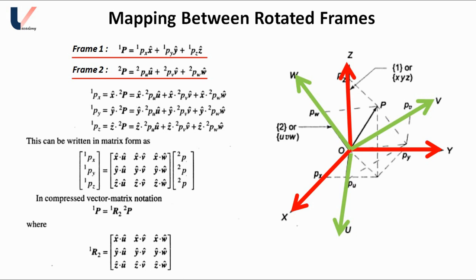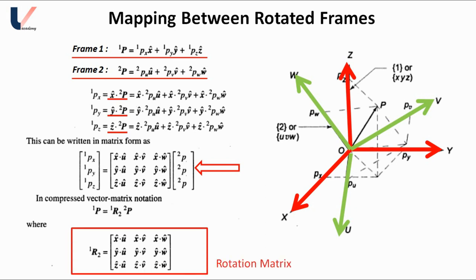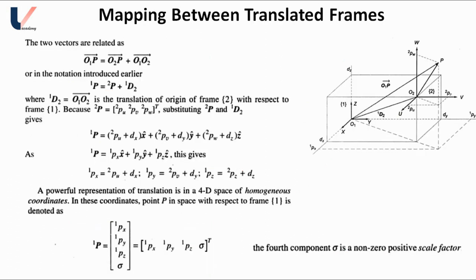This is achieved by projecting vector 2P onto the coordinates of frame 1 using dot products. So 1Px = x̂ · 2P = x̂·2Pu·û + x̂·2Pv·v̂ + x̂·2Pw·ŵ. Similarly 1Py = ŷ · 2P and 1Pz = ẑ · 2P. This can be written in matrix form, where 1P is obtained from 2P by multiplying by a matrix known as the rotation matrix. The order of multiplication is very important here.